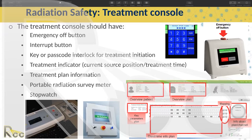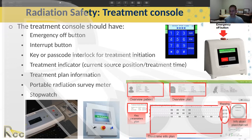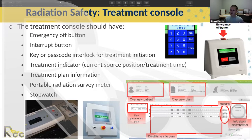The treatment console shows the current source position and treatment time. You need to get well oriented with your machine — how does it display where the source is? If you do have an interrupt, how do you know where it stopped? It's also important to think about what the most common type of problem is with your afterloader, like a stuck source and where it's most likely to get stuck — probably at one of those interfaces. For endobronchial treatments, it can get stuck in many places.